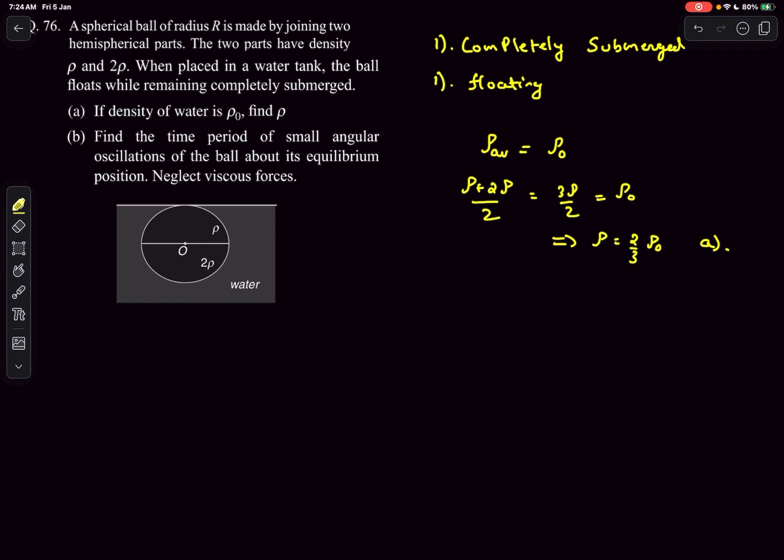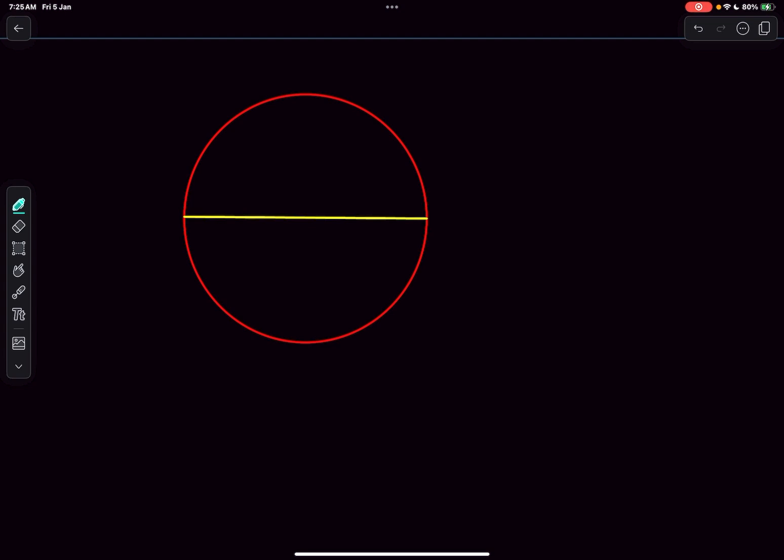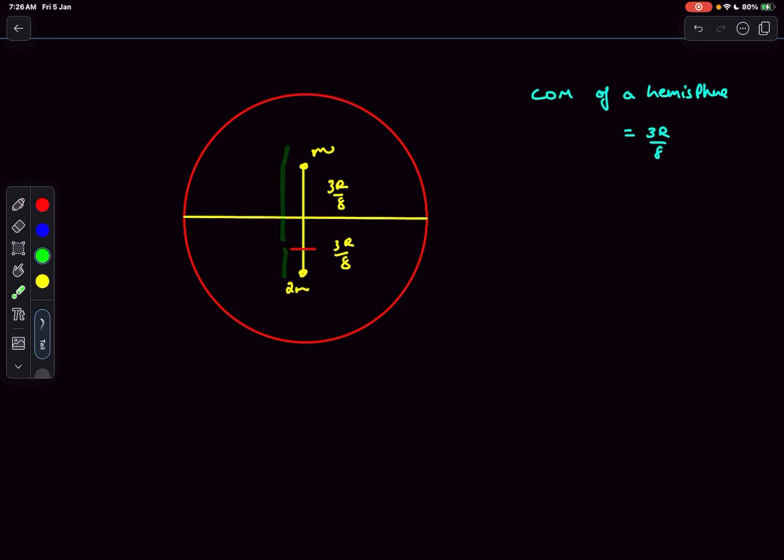For that, it's better to find out where the center of mass of the body is. We're using the information that the center of mass of a solid hemisphere is at a distance of 3R by 8 from the center of curvature along the symmetry axis. Let's call the mass of the upper hemisphere M and the lower hemisphere 2M as its density is double. The center of mass will be closer to the 2M mass. The distance of the center of mass from these individual masses will be in the opposite ratio of the masses. As the ratio of masses is 1 to 2, the ratio of these two distances is also 1 to 2.